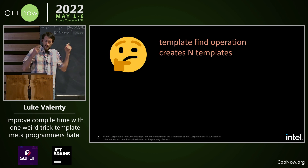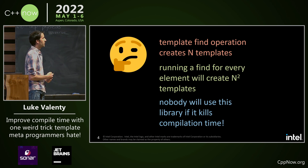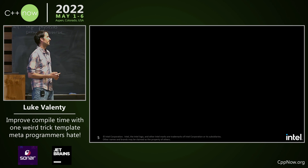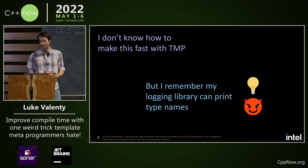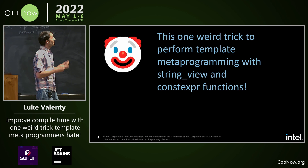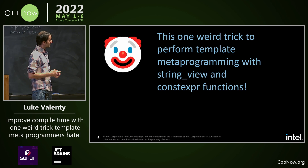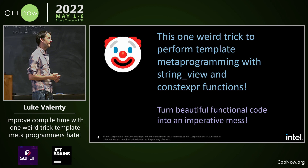A template find operation creates N templates. Running a find for every element will create N squared templates. Nobody will use this library if it kills their compilation time. I don't know how to make this fast with template metaprogramming, but I remember my logging library can print type names. This one weird trick: perform template metaprogramming with string_view and constexpr functions.